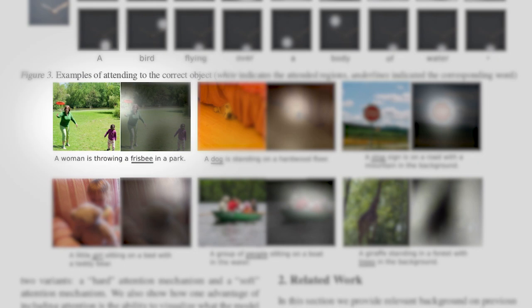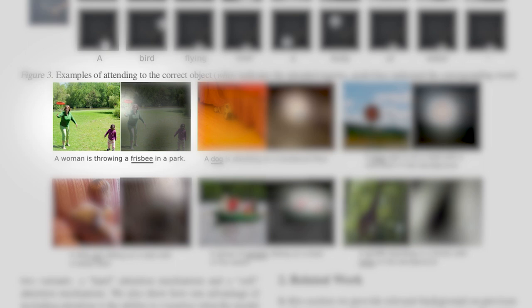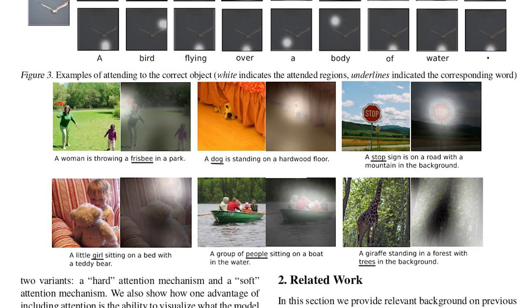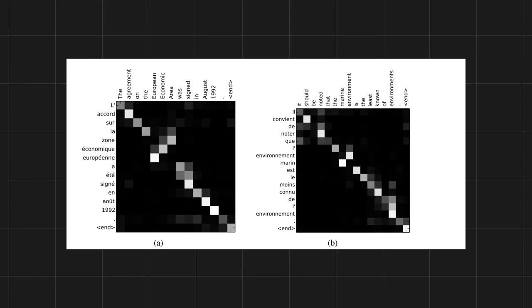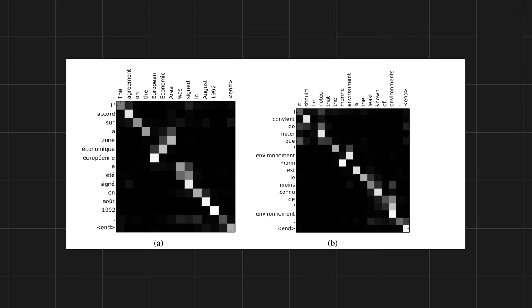In the 'Show, Attend and Tell' example, the caption of the image is 'a woman is throwing a frisbee in a park,' and when it predicts the word 'frisbee,' it automatically focuses attention on the frisbee in the image. It's remarkable how attention has learned to identify things in an image with no prior knowledge. For neural machine translation, attention looks like a matrix where every French word attends to every other English word, enabling complex cross-language relationships and better translation.